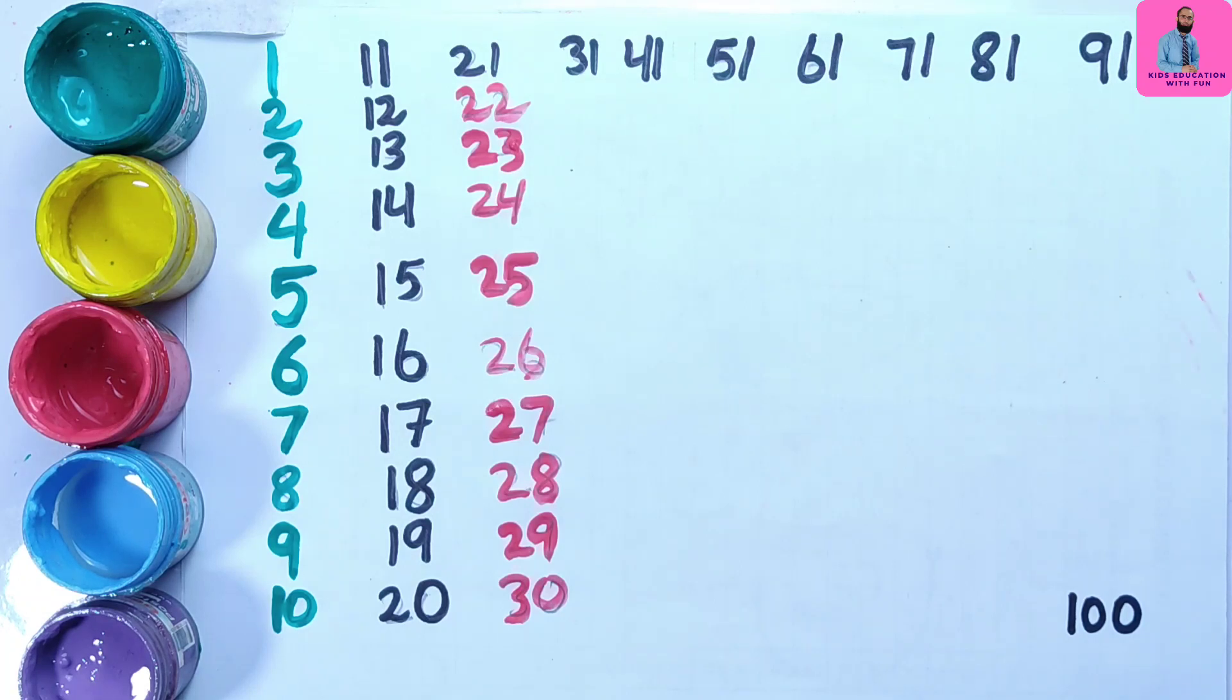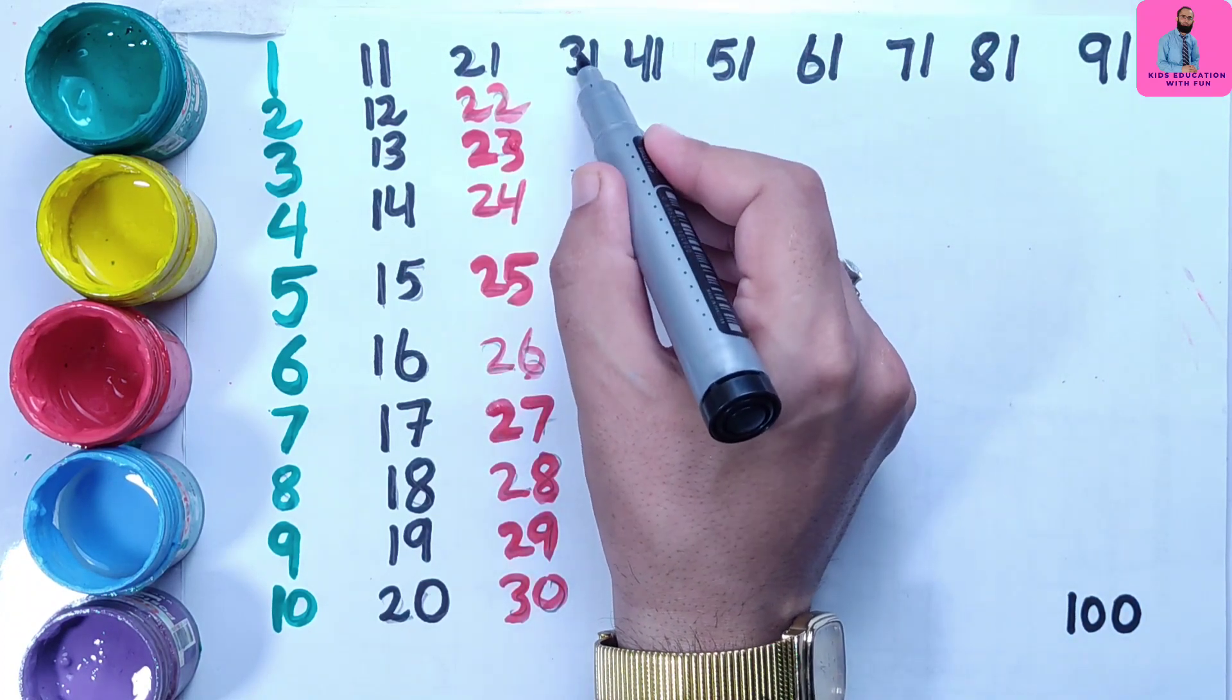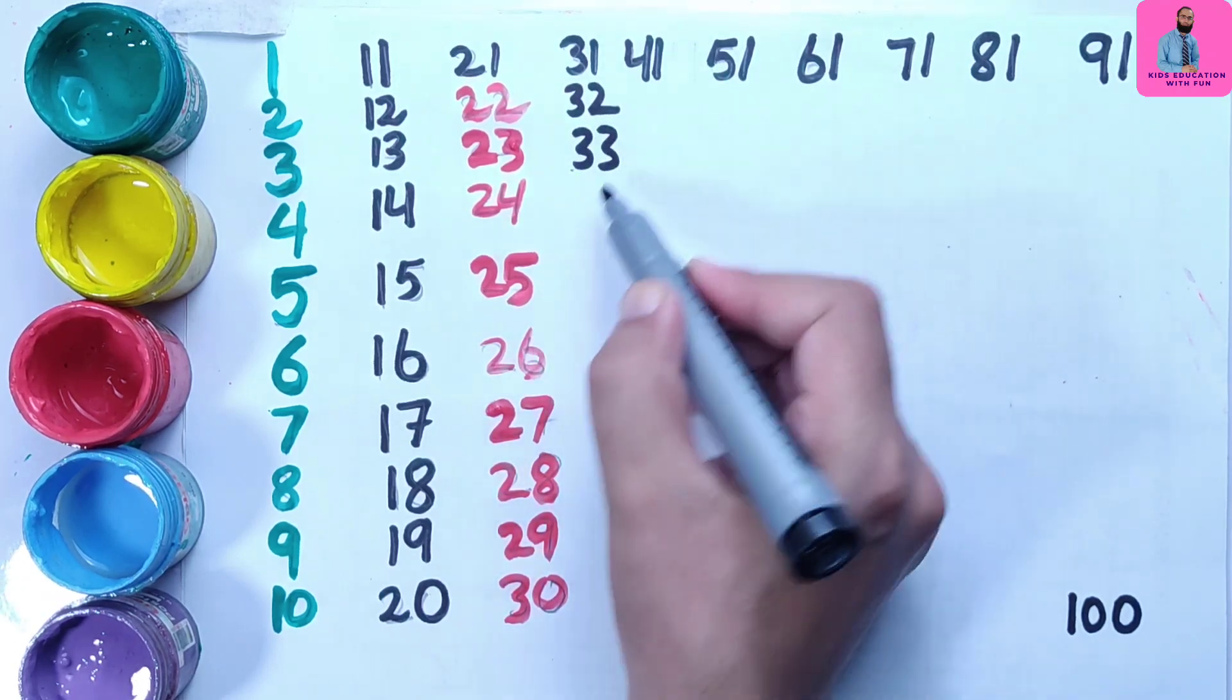With this marker, the remaining numbers I'm writing with this black color to quickly finish it. 31, 32.